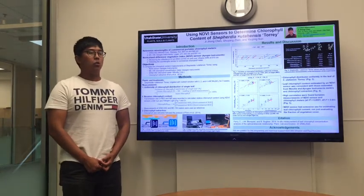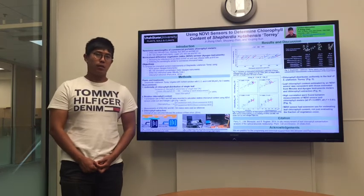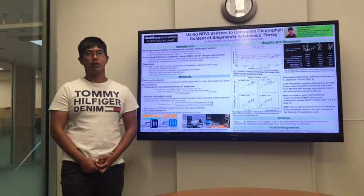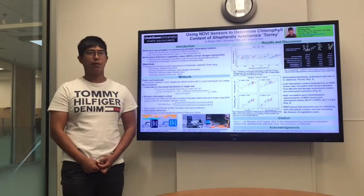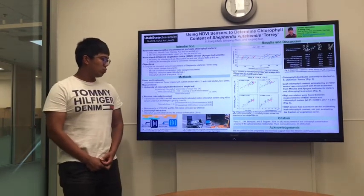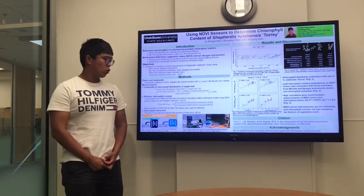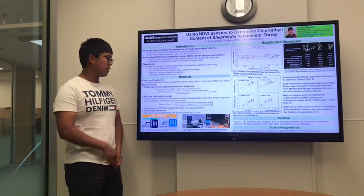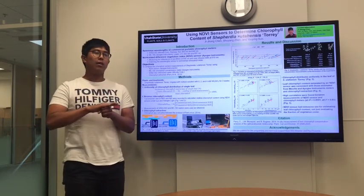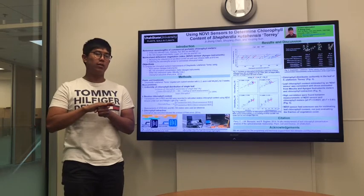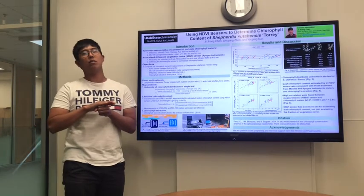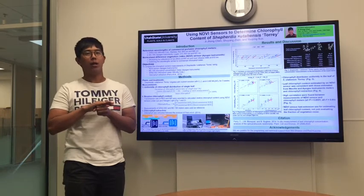Second, we used an NDVI sensor to estimate the chlorophyll level of a single leaf. How we estimate the chlorophyll level is shown in Figure 1 — we cover the downward-looking sensor with a leaf to record the transmitted red light and near-infrared light.